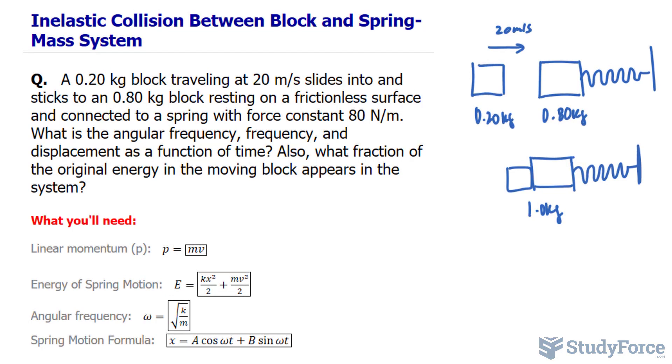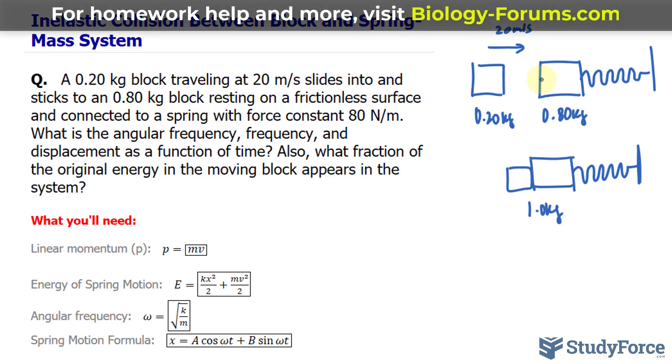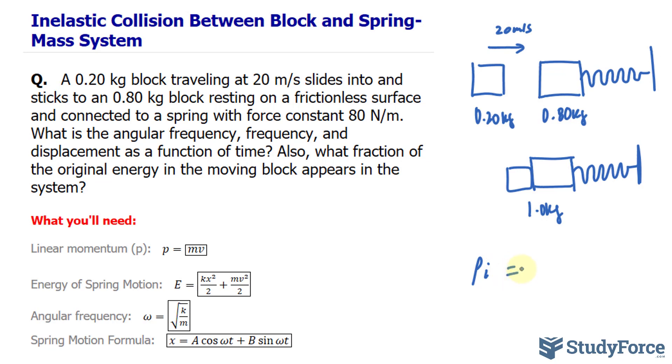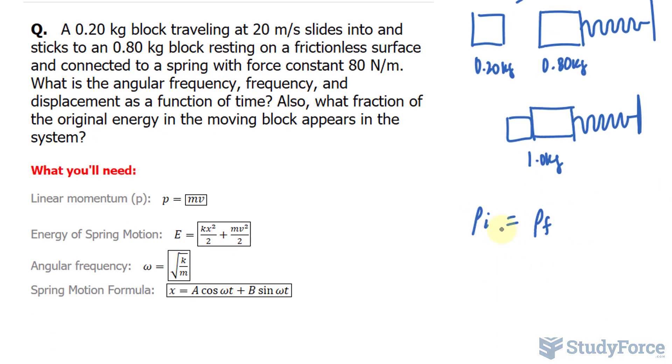Now, the reason why this is an inelastic collision is because when this block hits this block, which is attached to the coil, they don't just bounce off of each other. They stick, and that's an example of inelastic collision. Whenever that happens, we can use the conservation of momentum formula, which tells us that the momentum initially is equal to the momentum final. And momentum, which I've represented by the letter P here, is calculated by taking the mass times the velocity.